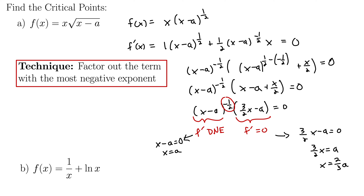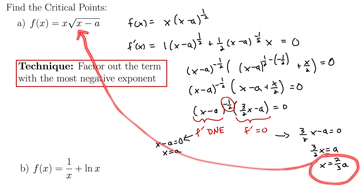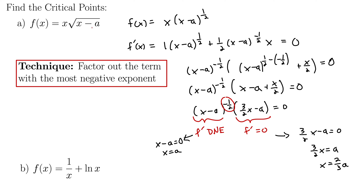Recall that critical points must be in the domain of f of x. Is x equals 2 thirds a in the domain? No — substituting gives 2 thirds a minus a, which is negative inside the radical, so x equals 2 thirds a is not in the domain and must be discarded. All domain arguments are always referenced back to the original function, not f prime of x.